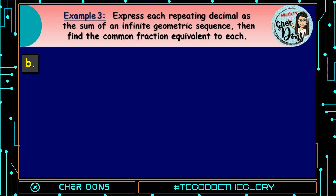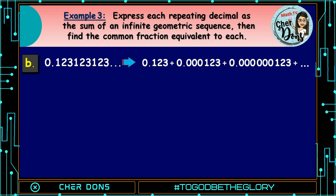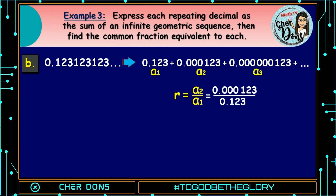Letter B: 0.123123123... Again, write the decimal as a sum: 0.123 plus 0.00123 plus 0.00123, and so on. To find the value of r, our common ratio, we divide the second term by the first term — a sub 2 divided by a sub 1 — and that is 0.00123 divided by 0.123, which equals 0.001.